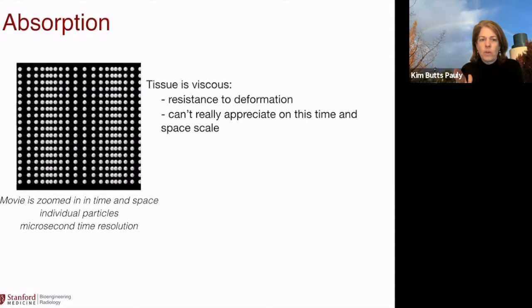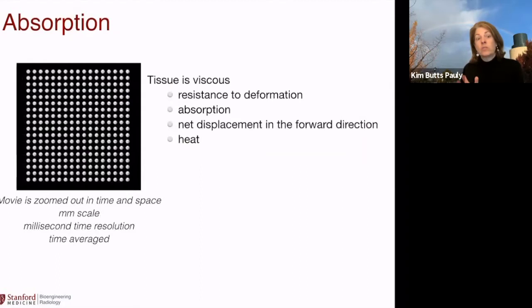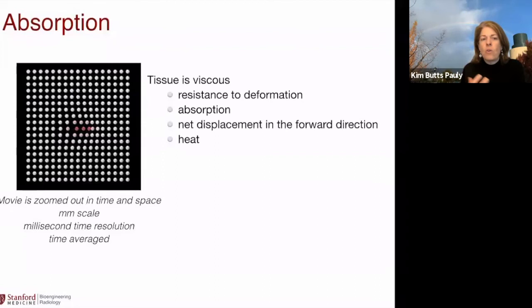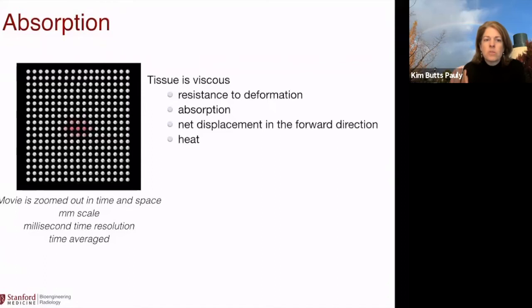That's what's happening with ultrasound — tissue is viscous, there's a resistance to deformation, so it ends up absorbing heat. We often picture molecules oscillating back and forth around their zero position, but if you zoom out in both space and time, there's a focal spot that heats up. Those molecules have a net displacement forward that's bigger at the focus where intensity is bigger. The tissue then relaxes slowly — that's the viscous part of viscoelastic — and a shear wave gets generated as well.